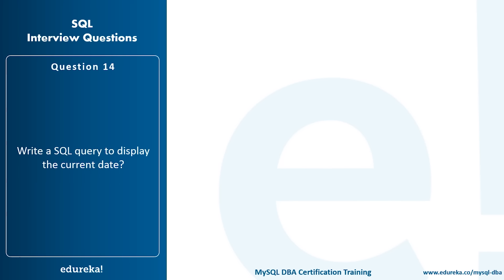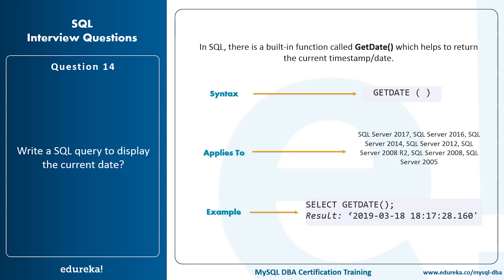Write a SQL query to display the current date. In SQL, we use the GETDATE() function to return the current date and timestamp. The syntax is simply GETDATE() and it applies to SQL Server 2005 through 2017. To display the current date, you can write: SELECT GETDATE(). When you execute this query, the current date and time will be displayed as output.